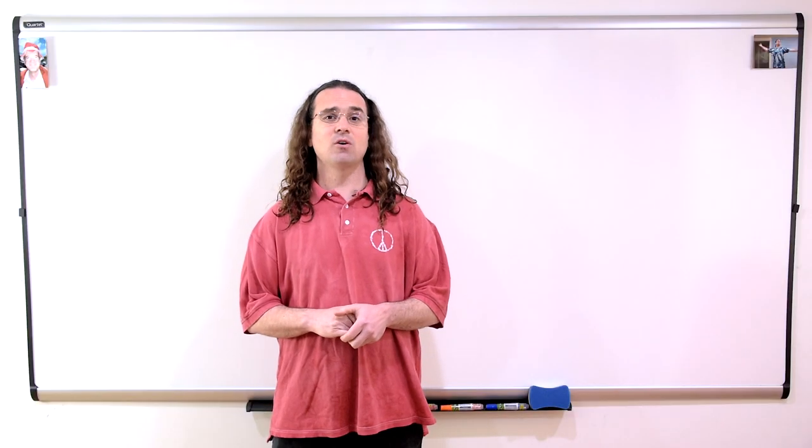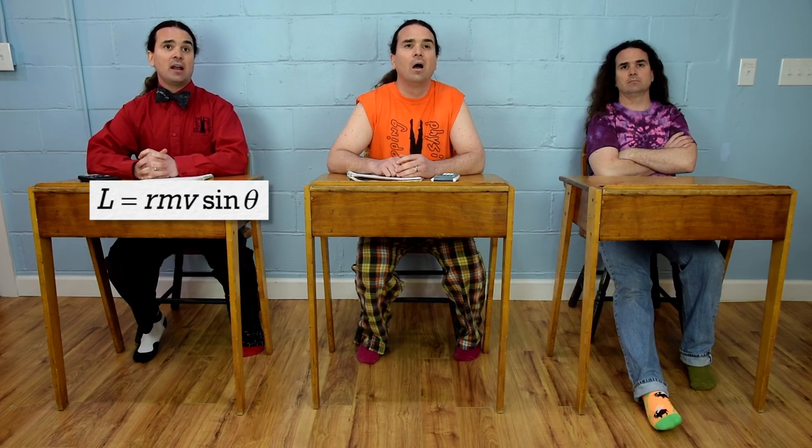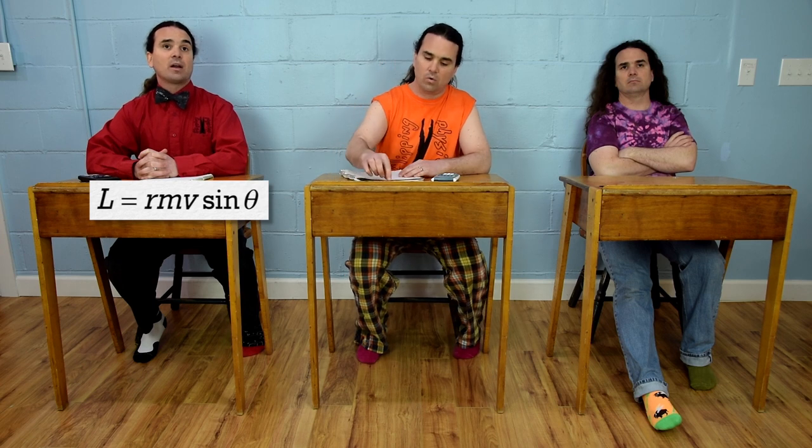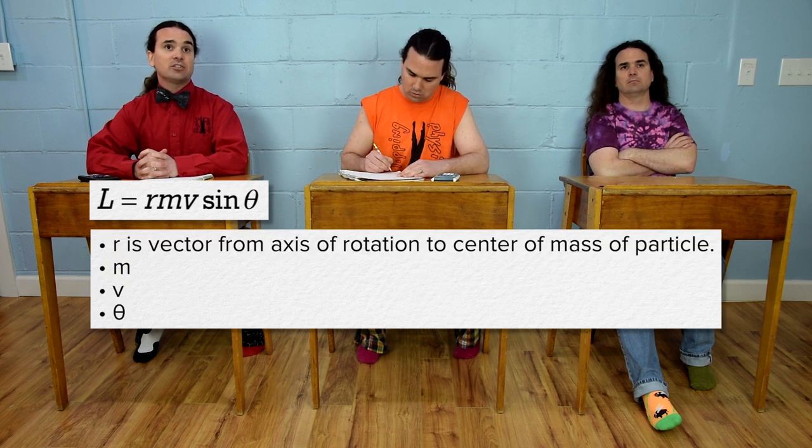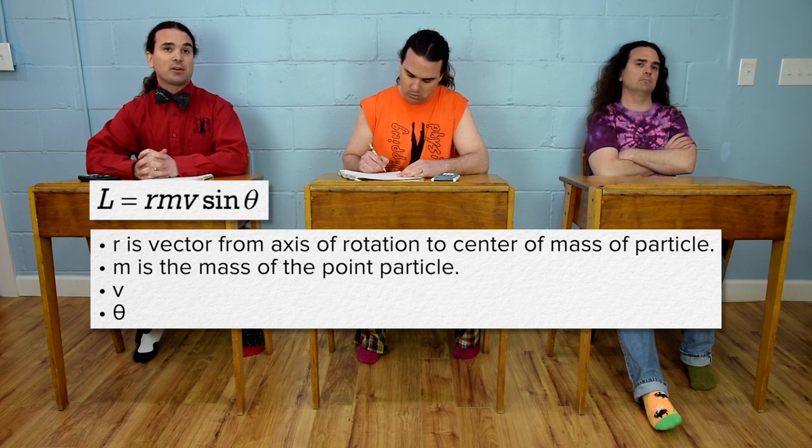Billy, please give us the equation for the angular momentum of a point particle. The angular momentum of a point particle equals rmv sin theta, where r is the vector pointing from the axis of rotation to the center of mass of the point particle, m is the mass of the point particle,